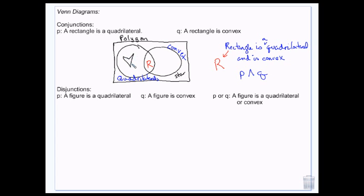In here we could have something like this — it's a quadrilateral but it's not convex. And in here we could have pentagons and all kinds of other shapes that are just not quadrilaterals. But this zone in the middle — if quadrilaterals is P and convex is Q — this zone in the middle is P and Q.